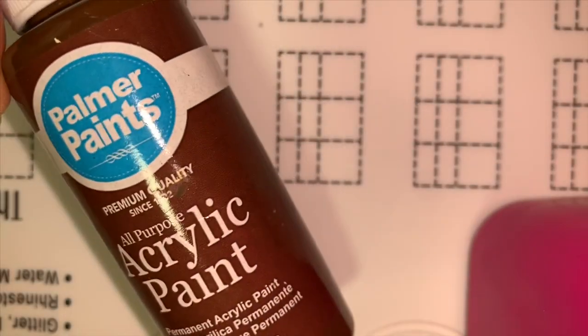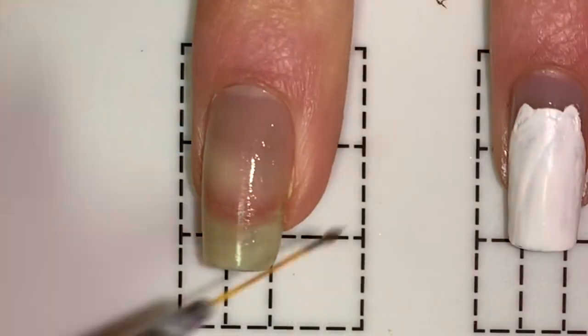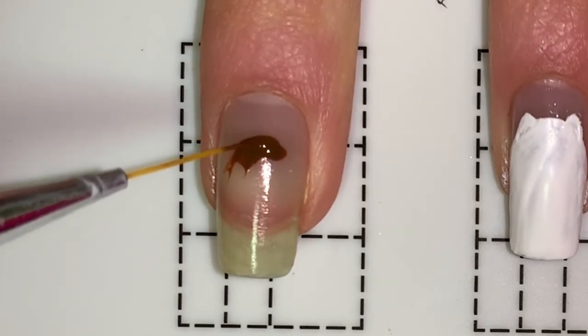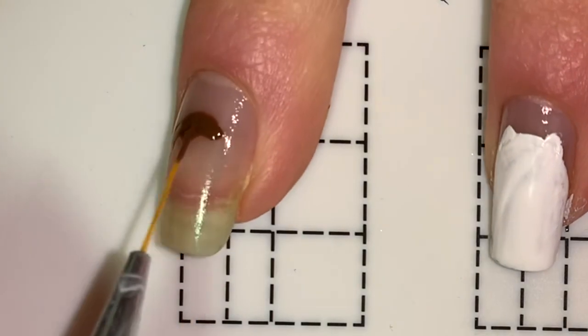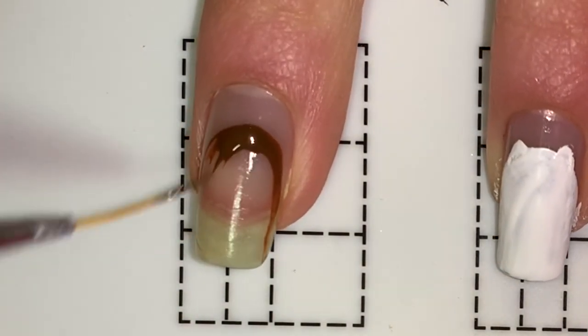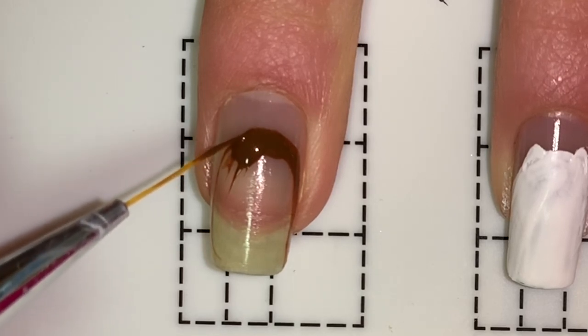Now for my middle nail, I'm using brown acrylic paint because I don't have brown nail polish, which actually ended up making the design really difficult to see until I put a top coat on. It ended up looking good in the end, so I don't really mind. It's just kind of annoying for filming purposes.